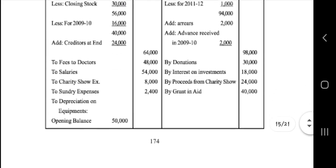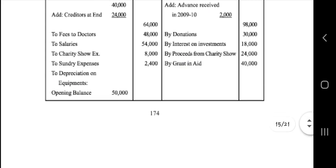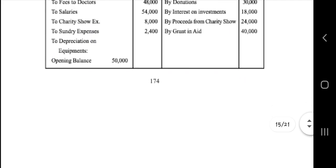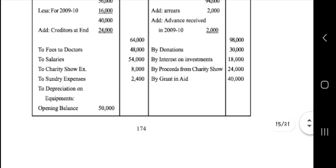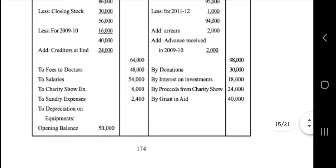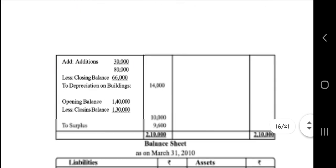Here you have to write: fees for doctor is 48,000, salary is 54,000, charity shown is 8,000, Sunday expenses is 2,400, and opening balance is 50,000. Here also, donation is 30,000, investment is 18,000, process is 24,000. This is the process for citation. Grant to note is 40,000.